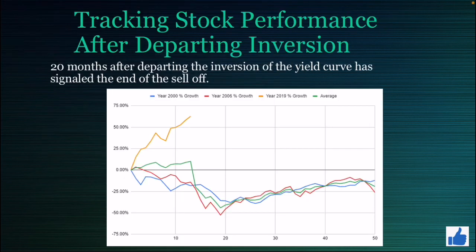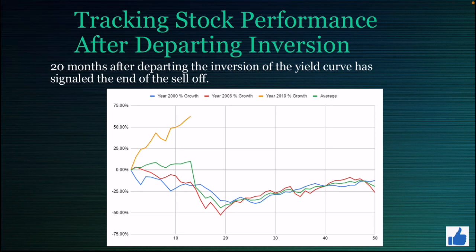It's important to take a look at how stocks performed after departing yield curve inversion. In 2000, in the blue line, when we inverted, we dropped about 30% and got to that point by month 20. In red, for the 2006 inversion, we dropped as much as 50% in that range of 20 months after departing inversion. But in orange, you can see we went in the exact opposite direction, exceeding 50% for the S&P 500 — I do believe that's being influenced by a record level of stimulus. In my view, I'm interpreting this as a delay in the sell-off, and potentially the sell-off could increase in volume when it does occur.